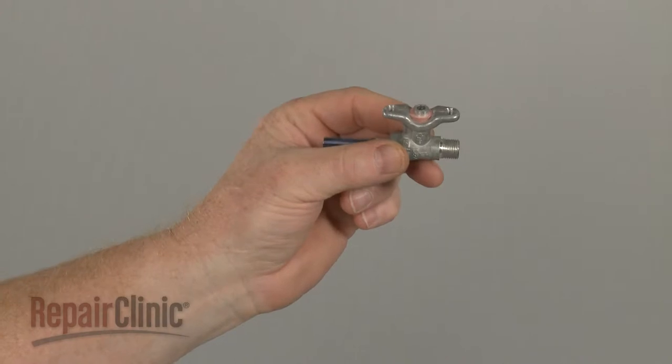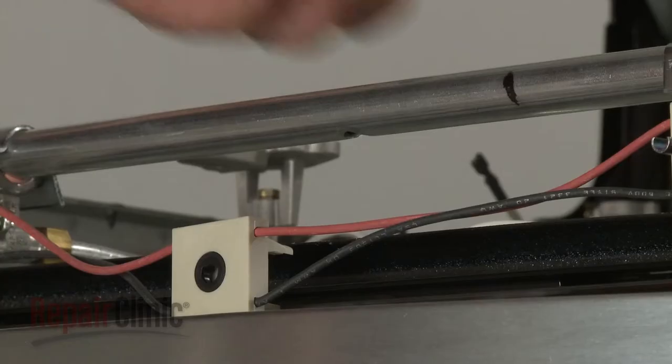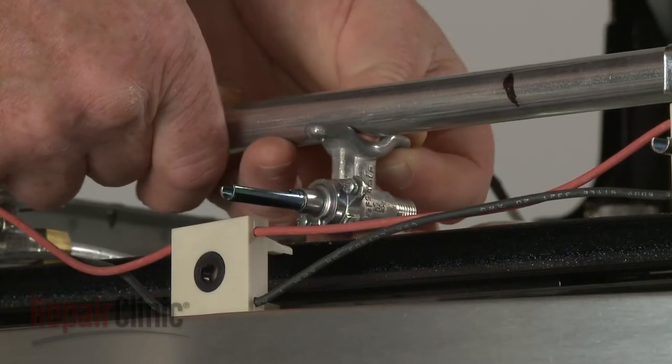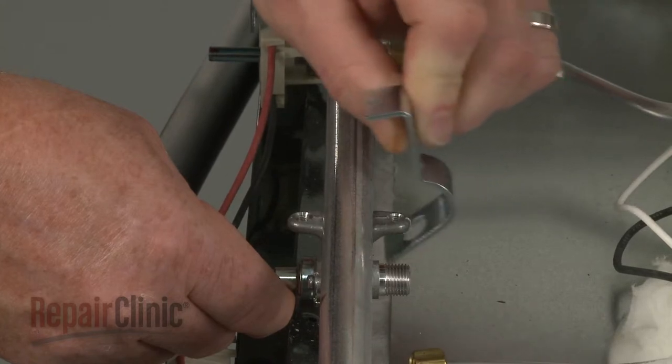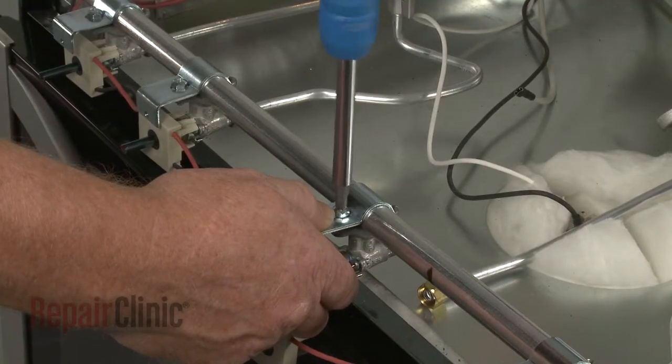Before you install the new burner valve, confirm that the gasket is intact. Align the new valve on the manifold. Position the mounting clamp, then thread and tighten the screw.